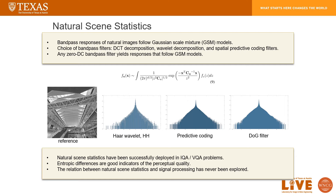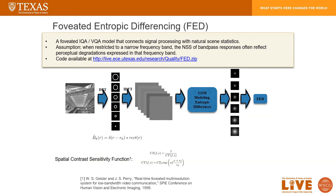An interesting question that has never been explored before is: are these bandpass responses related to frequency information? If so, how are they related, and can we design foveated VQA algorithms based on that? Towards making progress in this direction, we propose a full reference foveated IQA or VQA model that connects signal processing with NSS. We first assumed that when restricted to a narrow frequency band, the NSS of bandpass responses often reflect distortions expressed in that frequency band. Then we designed the FED algorithm whose architecture is described in the following figure.